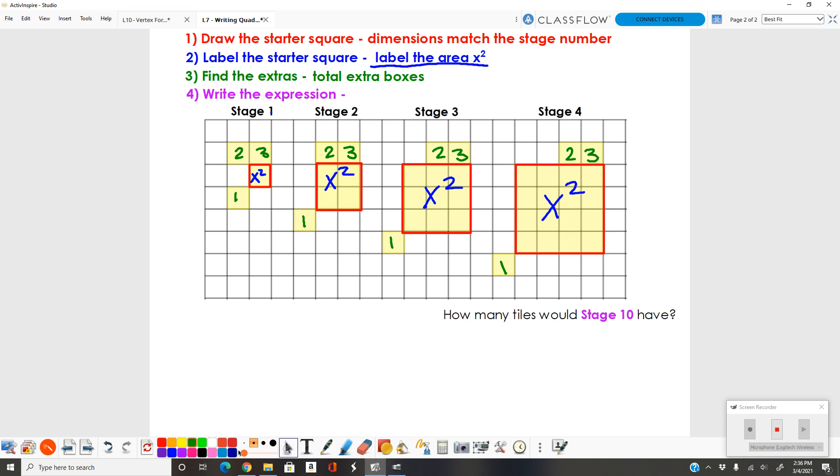Now it's time to write our expression. When we write our expression this time, we write our starter square, which is x squared, plus the total number of extra boxes I have, three. So x squared plus three.